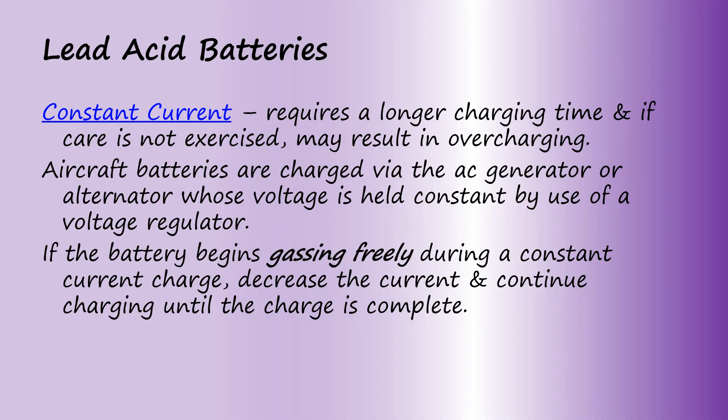The constant current method requires a longer charging time and if care is not exercised, may result in overcharging. Aircraft batteries are charged via the aircraft generator or alternator whose voltage is held constant by use of a voltage regulator. If the battery begins gassing freely during a constant current charge, decrease the current and continue charging until the charge is complete.